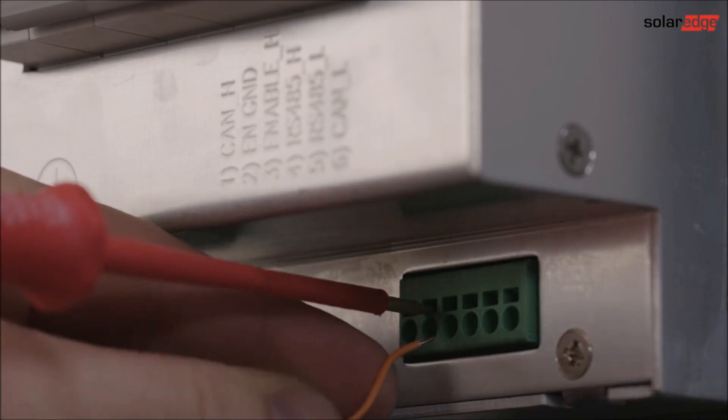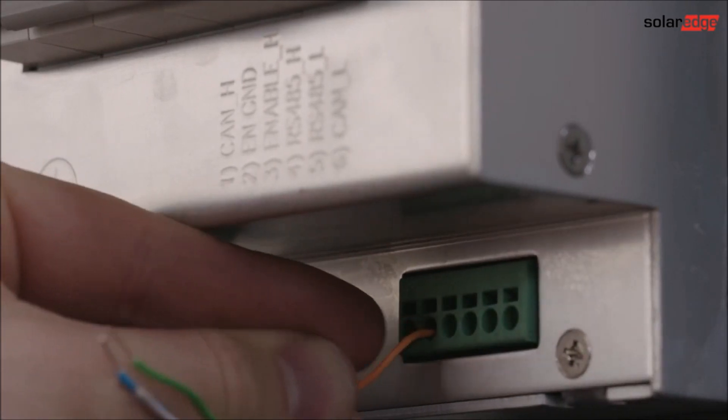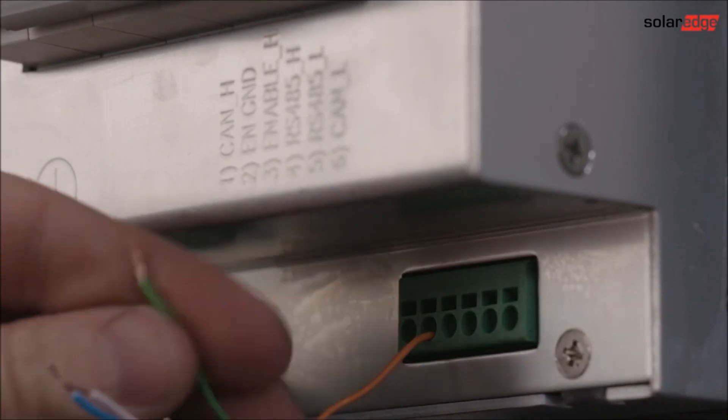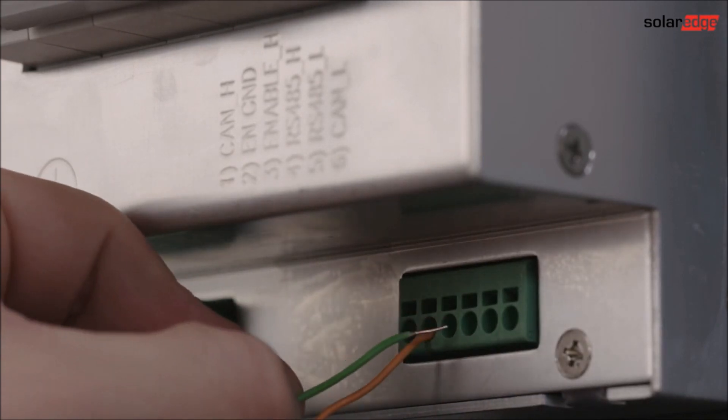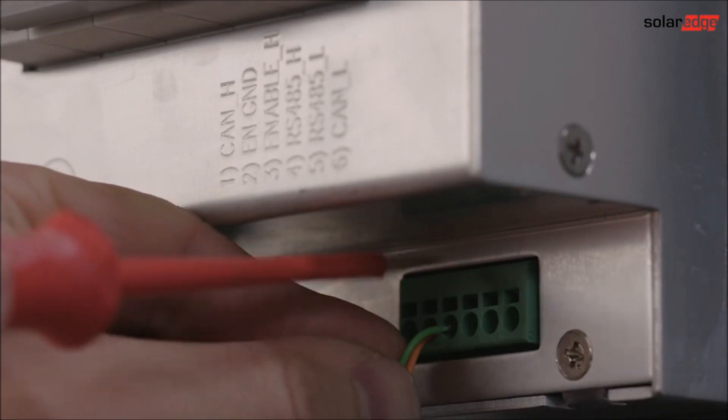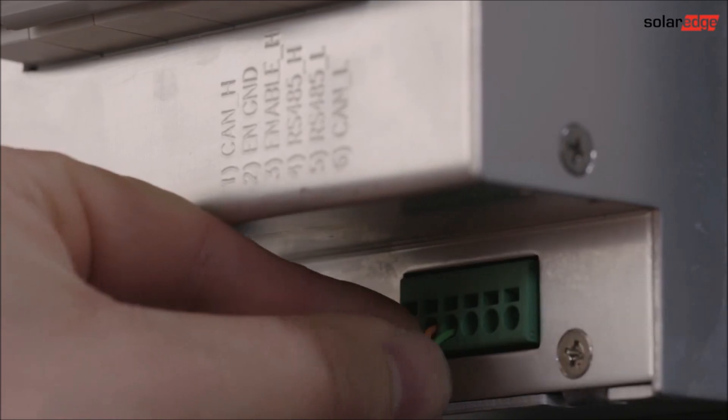Next up is the connection of the communication cable. Four wires need to be connected to the battery: Ground, enable, RS485 high and RS485 low.